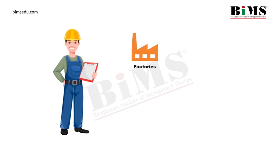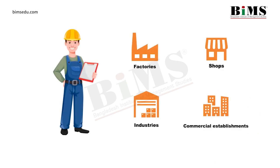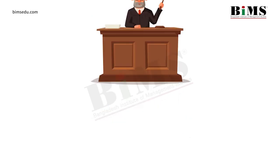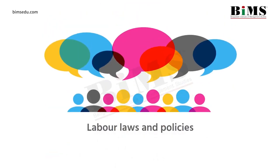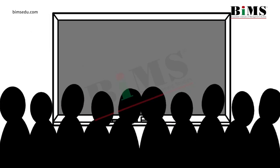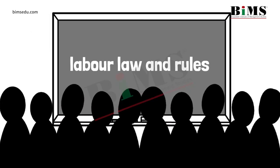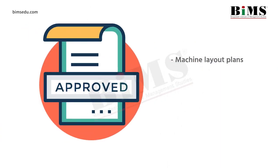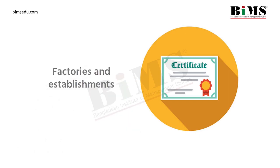Key functions carried out by DIFE include: inspecting factories, shops, industries, and commercial establishments; prosecuting the violators of the laws through labor courts; participating in the formulation of labor laws and policies to enforce them; investigating the complaints received from workers; educating and advising workers and employers on labor laws and rules; carrying out publicity programs to increase awareness of OSH; and approving the factory's machine layout plans, modification, and expansion plans. DIFE is also responsible for issuing and renewing registration certificates for factories and establishments.